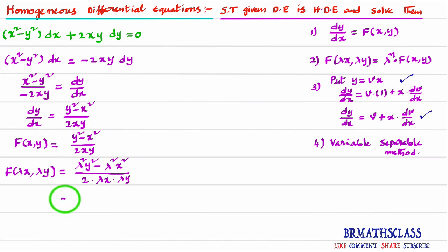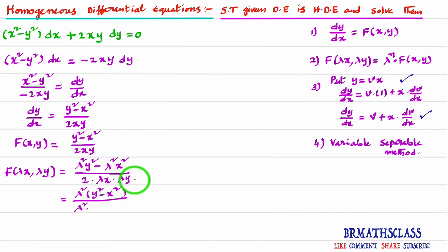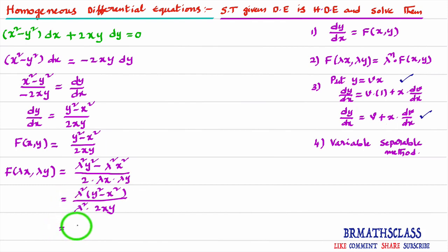We can take λ² common in the numerator. This gives λ²(y² − x²) divided by λ · λ · 2xy, which is λ²(2xy) in the denominator. The λ² in the numerator and λ² in the denominator cancel, leaving 1, which can be written as λ⁰ · (y² − x²) / (2xy).